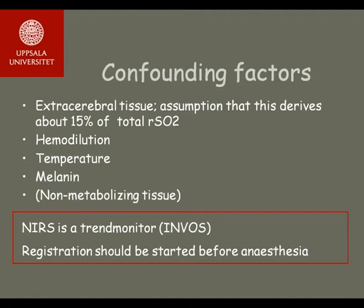There are several confounding factors to consider in the use of NIRS. Extracerebral tissue is estimated to contribute about 15% of the cerebral regional oxygen saturation reading, with the remaining 85% coming from the brain. This relation can vary depending on thickness of extracerebral tissue. Examples of confounding factors include haemodilution and temperature. Therefore it is important to use NIRS as a trend monitor for the individual patient, starting registration before the planned procedure. Non-metabolizing tissue in cadavers can show measurable NIRS values, further underlining the importance of a trend-monitoring approach.